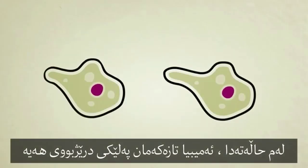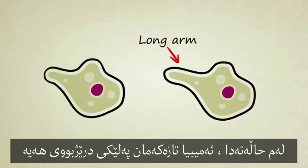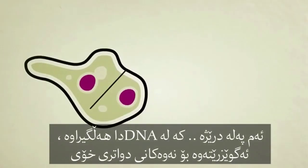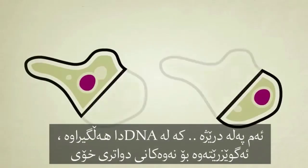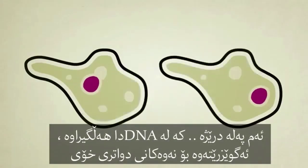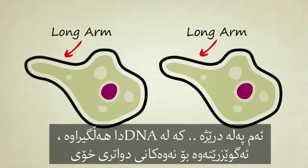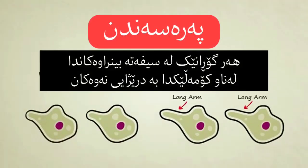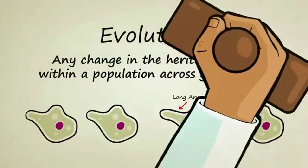In this case, our new little friend has an arm that stretches extra long. If he survives long enough to grow and reproduce, that extra stretchy arm — which is now coded for in his DNA — will be passed on to his children. Evolution: any change in the heritable traits within a population across generations has officially occurred.